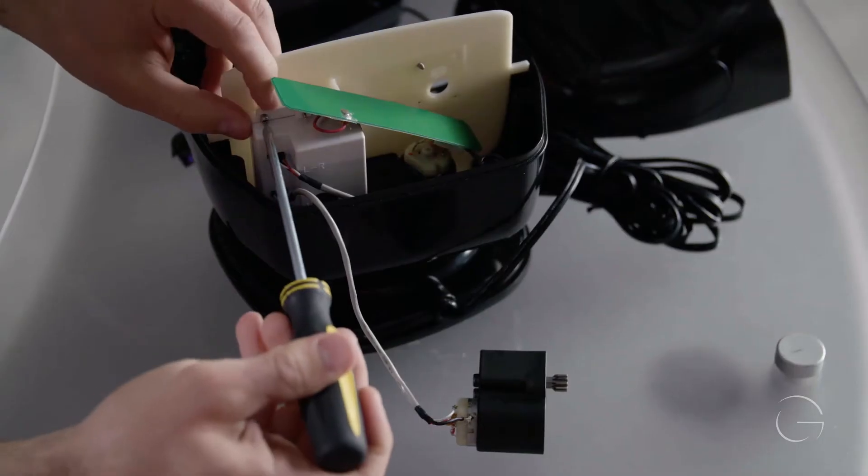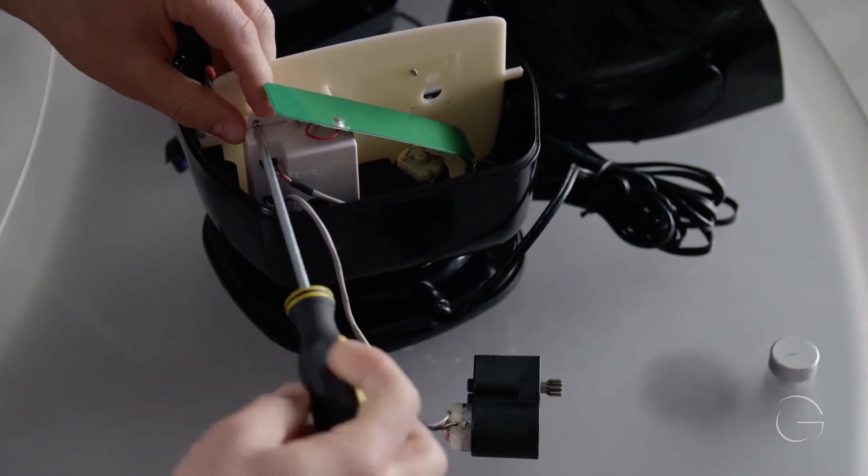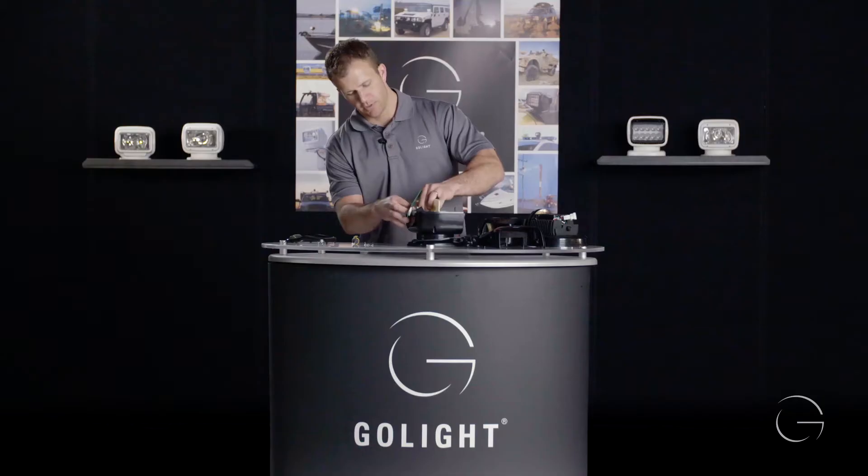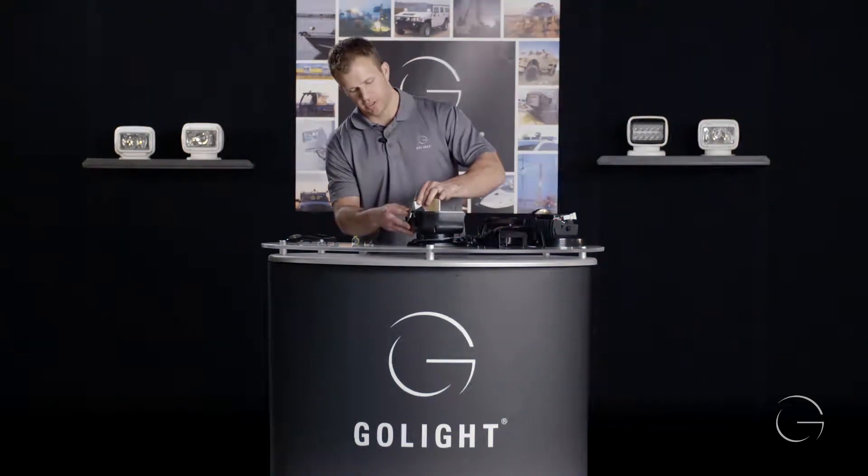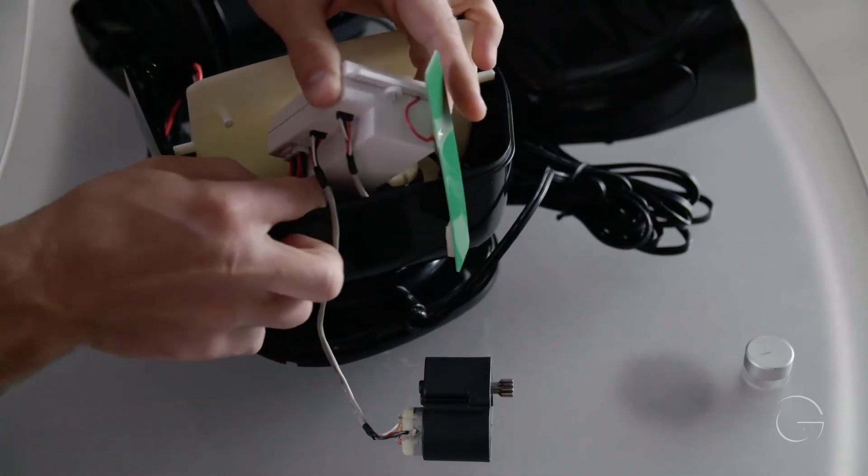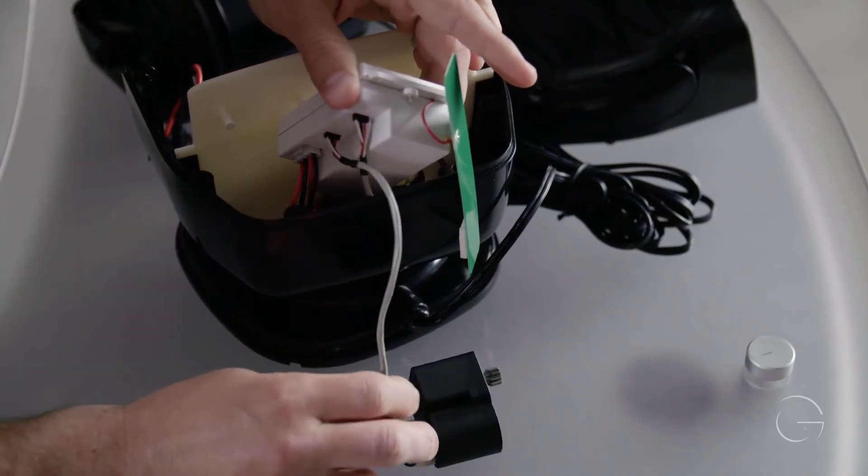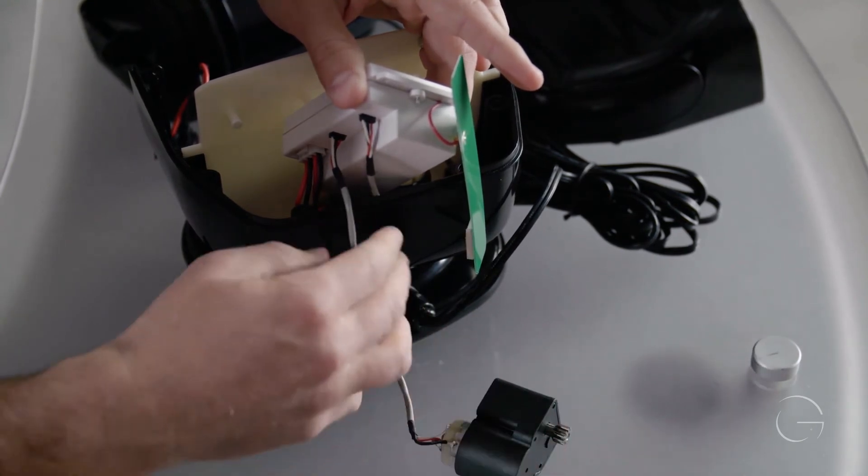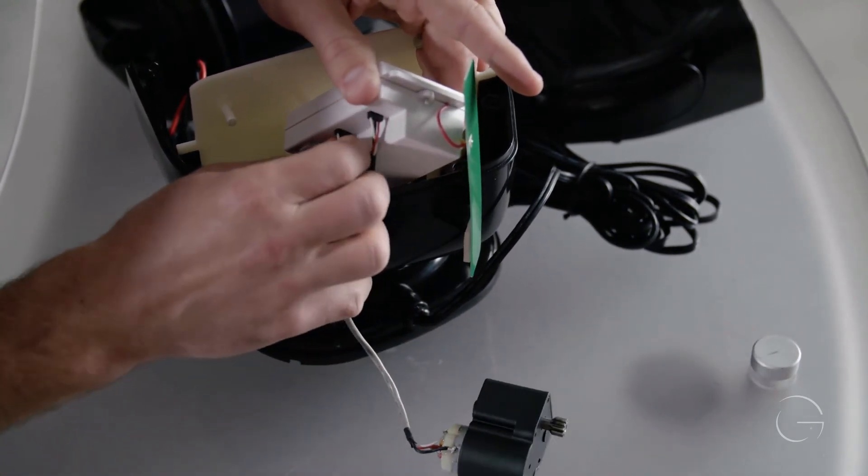Once that's removed, you'll lift the receiver up. You will find where the wires from the motor you are removing are in the receiver. Disconnect them.